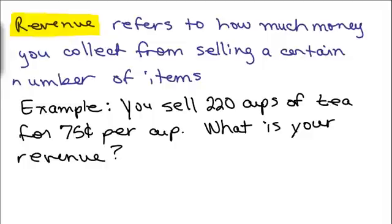In other words, you're sitting at a fair and during the day you sell 220 cups to passersby for 75 cents a cup. How much money have you collected? I bet you could figure this out without a formula or algebra. You would just multiply 220 times 75 cents.